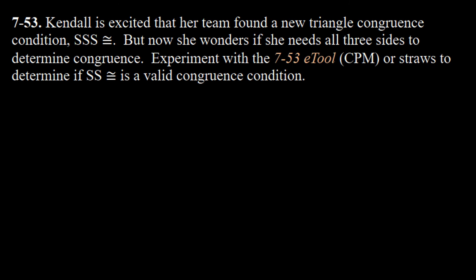Having to show fewer things to get two triangles congruent is more convenient. Kendall is excited about SSS, but she's now wondering if she needs all three sides. Maybe we can reduce it, because with angles, if you've got two of the angles it forces the third angle to be the same. So is it possible we could shorten this down to side-side congruence? Let's go back to Desmos and consider that.